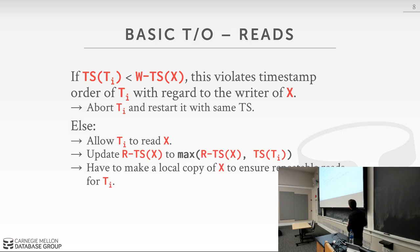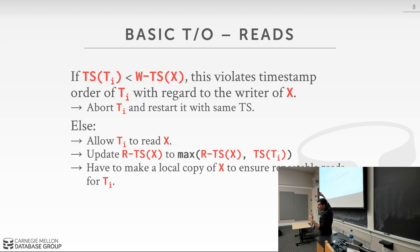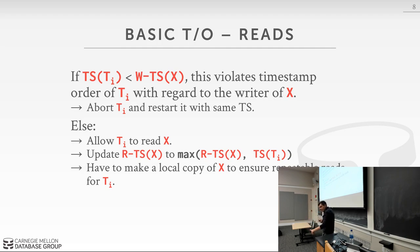If my timestamp equals the write timestamp of the object, that means I wrote to it — timestamps are unique and identify transactions — so I'm allowed to read it. For writes, I check that my timestamp is greater than both the read timestamp and write timestamp of the object; if a future transaction has already read the older version I'm about to overwrite, I must abort.